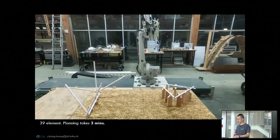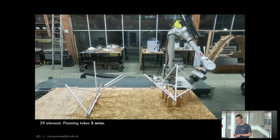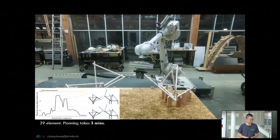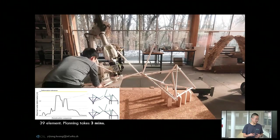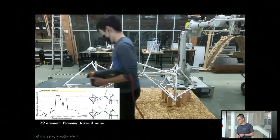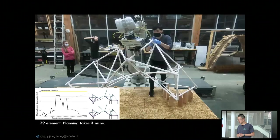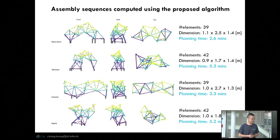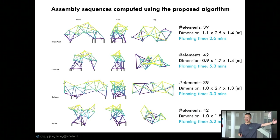Together, these two recipes — the backward search and the structural heuristic — give us a fast and scalable planning algorithm. In contrast to a naive forward search that cannot terminate in hours, it can find a complete construction plan for a complicated bar structure in only three minutes. We can also visualize the structural deformation along the construction steps in a plot, where each dot represents a simulation of the partially built structure, and we can see the deformation is controlled well under the given tolerance.